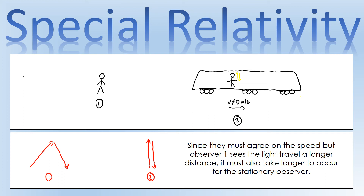Our founding principle of special relativity is that both observers must agree on the speed of light — it must be the same regardless of observer motion. Because observer one sees light travel a longer diagonal path, and the speed of light is constant, they must also measure that event taking a longer time. So to observer one, the light going up to the mirror and back down takes longer than for observer two. This is quite bizarre because we would expect them to agree on the time, but special relativity says the observer outside the reference frame of the light will see it take longer.